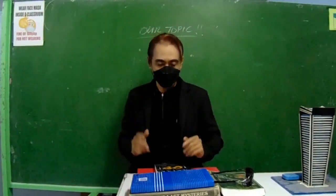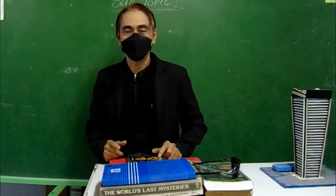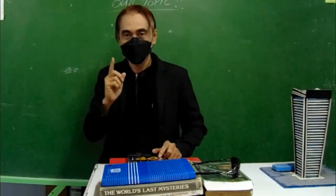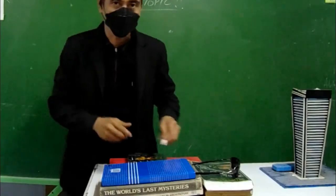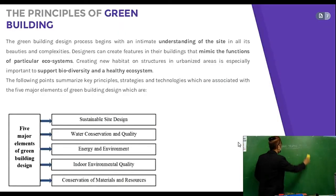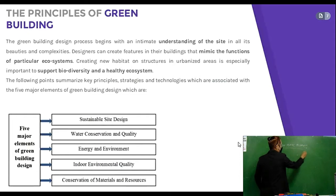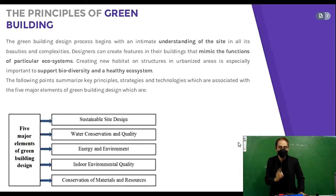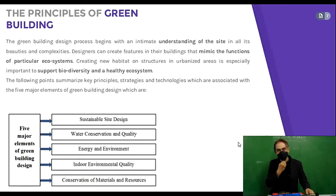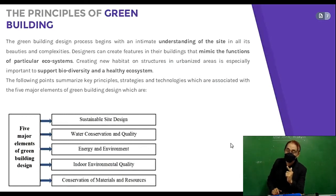Welcome back to our channel. Today's topic is the principles of green architecture or green building designs. The green building design process begins with an intimate understanding of the site in all its beauties and complexities. Designers can create features in their building that mimic the function of particular ecosystems, creating new habitats on structures. In urbanized areas, this is especially important to support biodiversity and a healthy ecosystem.